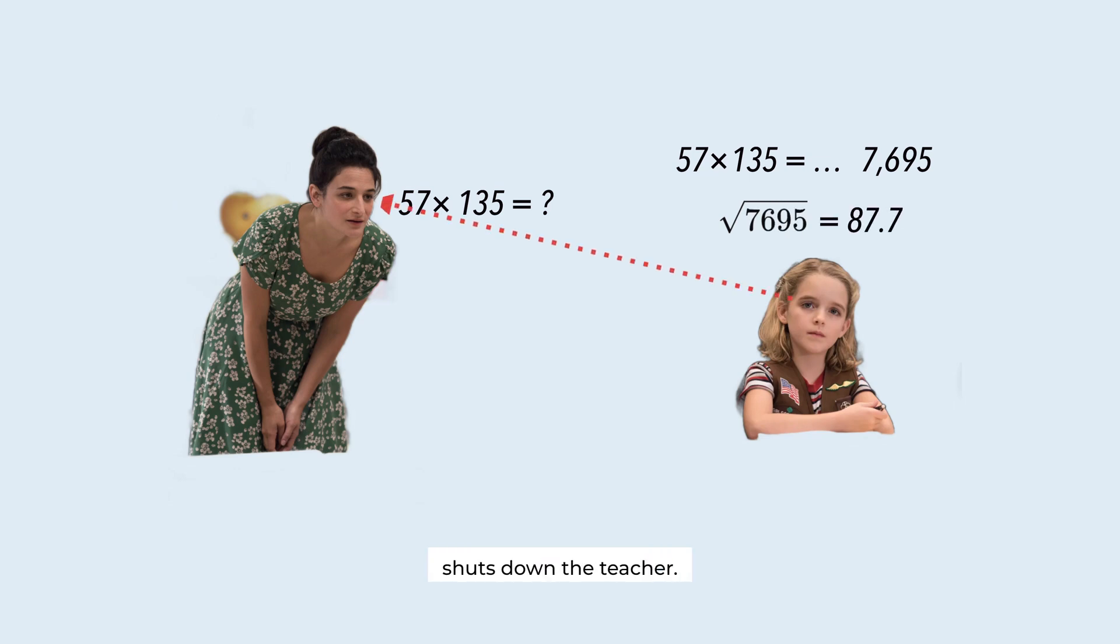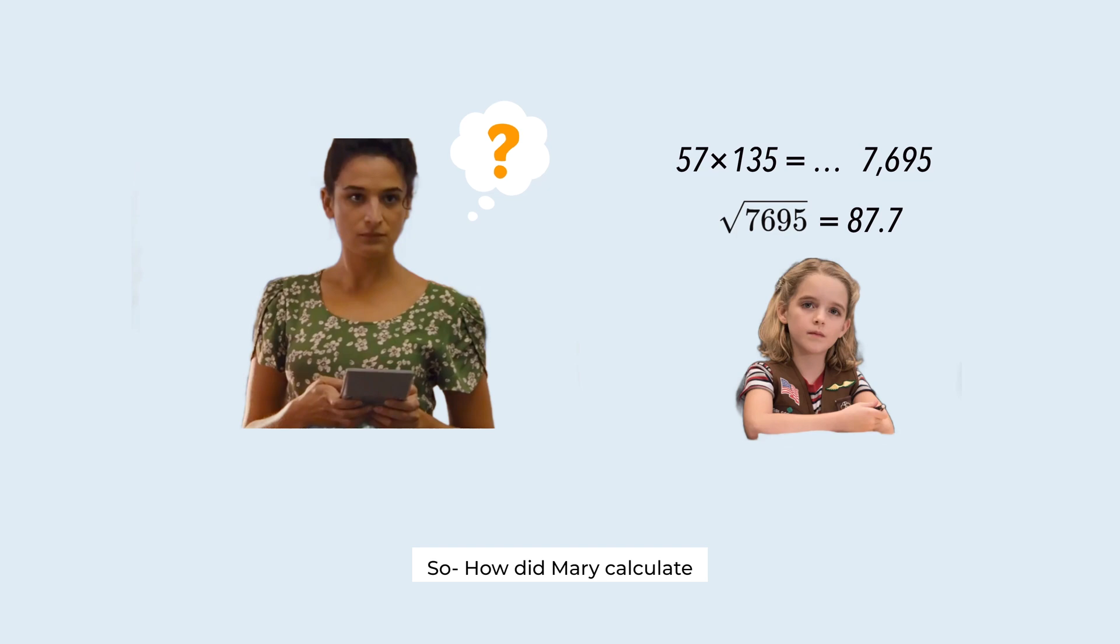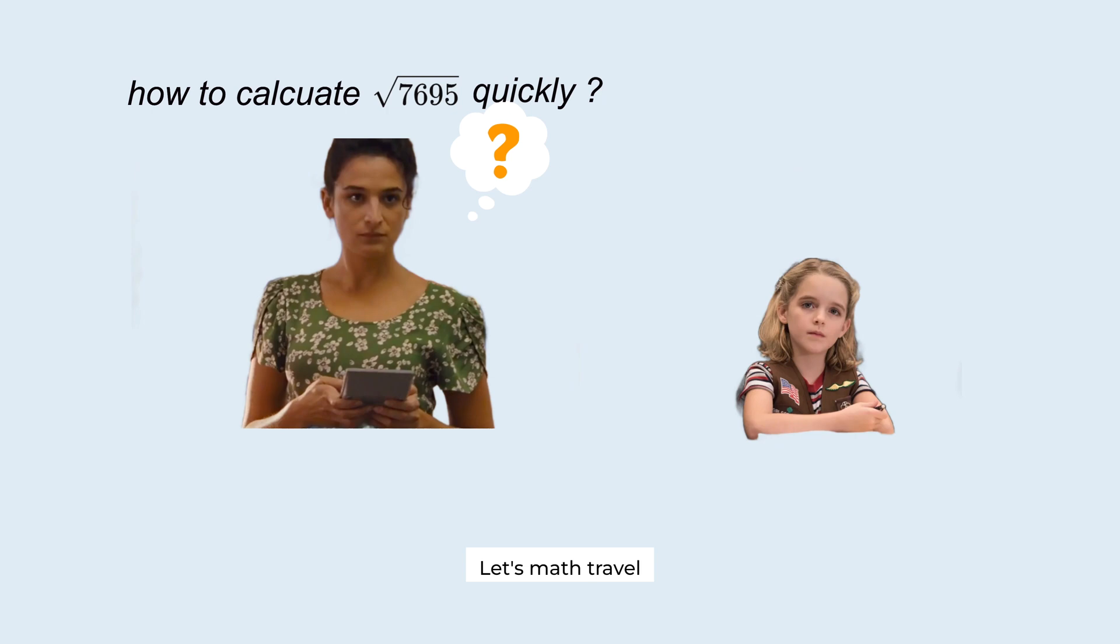Yeah, she totally shuts down the teacher. So, how did Mary calculate the square root of 7,695 so quickly? Let's math travel into calculation tricks to approximate the square root.